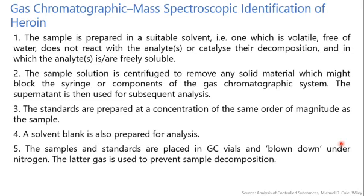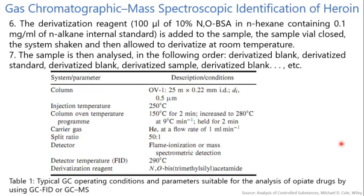In the next stage, the derivatization reagent — 100 microlitres of 10% NOBSA (N,O-bis-trimethylsilyl acetamide) in hexane containing 0.1 mg per ml of an n-alkane as the internal standard — is added to the sample. The sample vials are closed, the system is shaken, and then allowed to derivatize at room temperature. The sample is then analyzed in the following order: derivatized blank, derivatized standard, derivatized blank, derivatized sample, and derivatized blank, and so on.